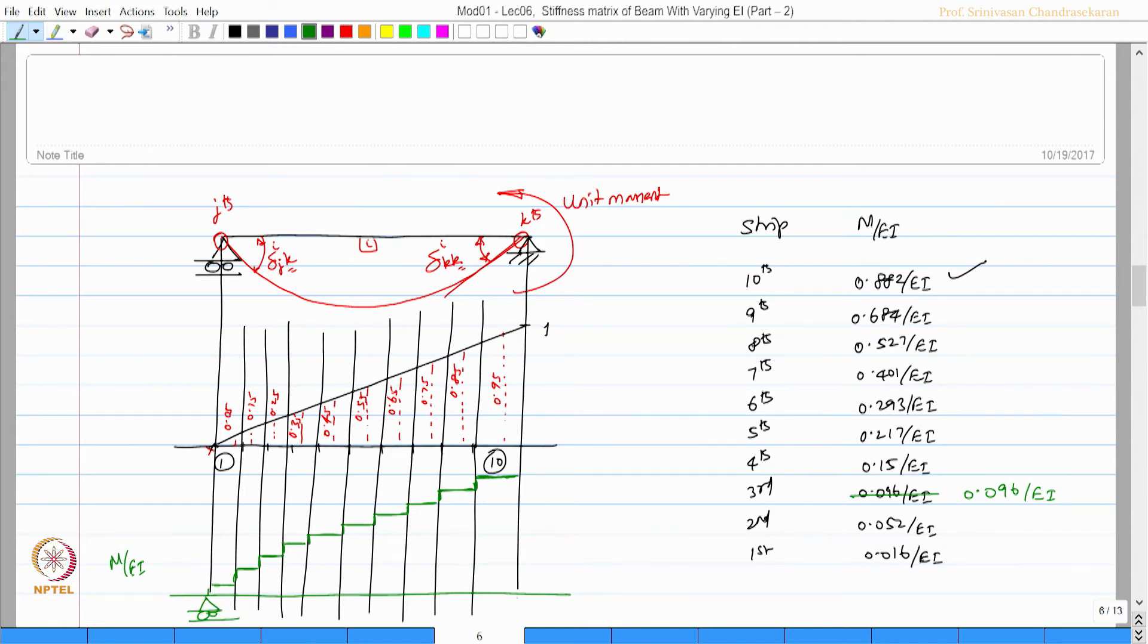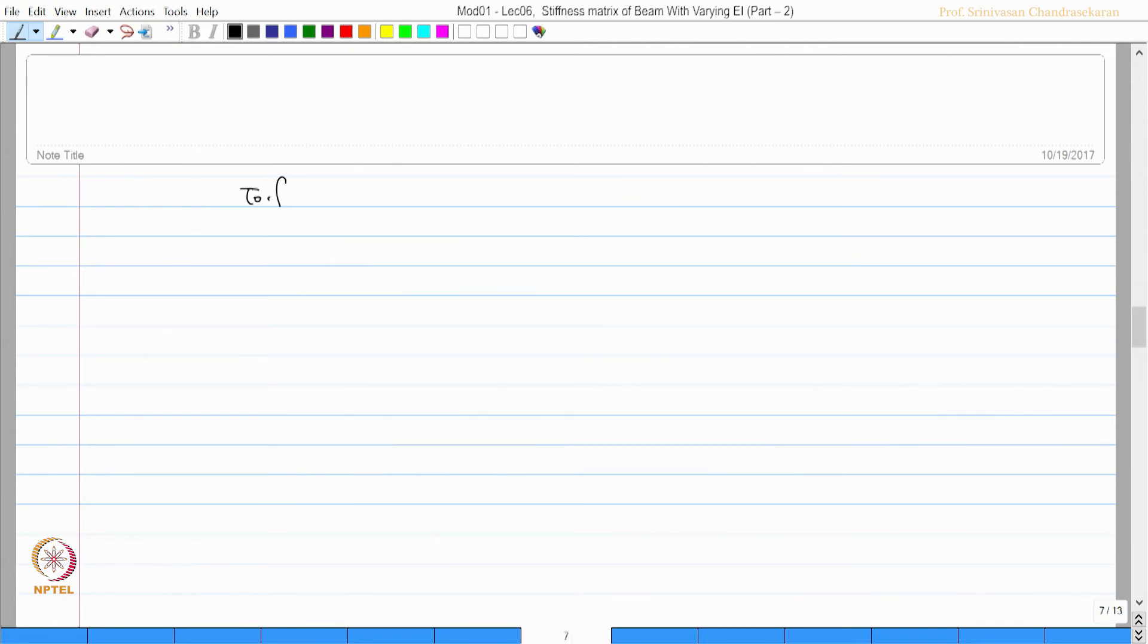So this becomes my beam and this becomes my loading diagram for the beam. I want to find now the reactions, which is V_B and which is V_A. Now to find V_B, take moment about A.